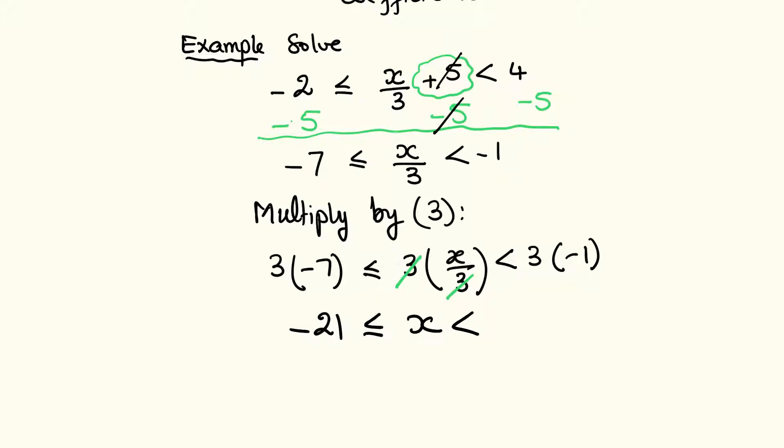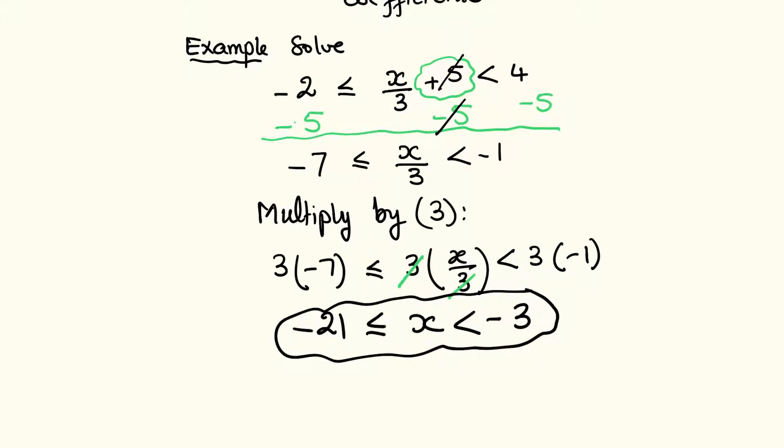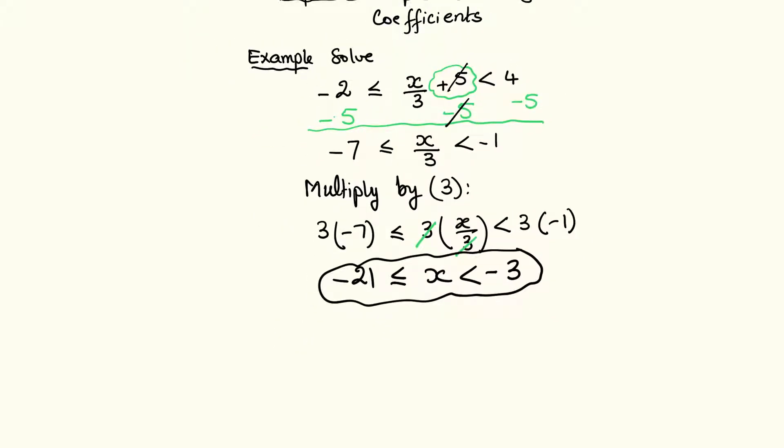multiplied by -1 is -3. So that is actually the solution of the compound inequality. I could write if I want to this solution as an interval, so it's -21 closed at -21 because of the...